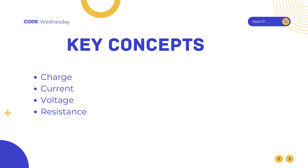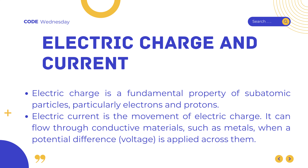Electric charge and current — electricity is like a dance between tiny particles called electrons and protons. These particles have a special property called electric charge and it's fundamental to how electricity works. Think of electric charge as a property that some particles, like electrons and protons, have. Electrons carry a negative charge, while protons have a positive charge. Opposite charges attract each other, just like a magnet attracts something metal, while similar charges push each other away, like magnets pushing each other apart.